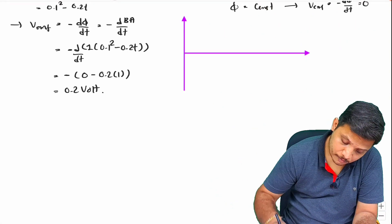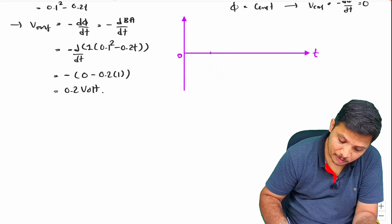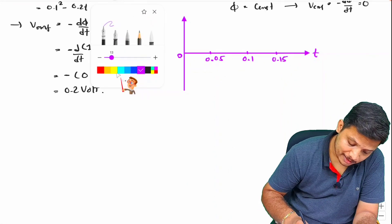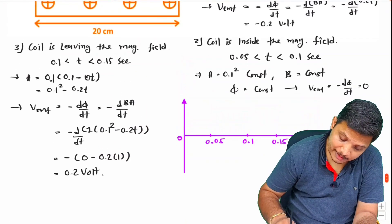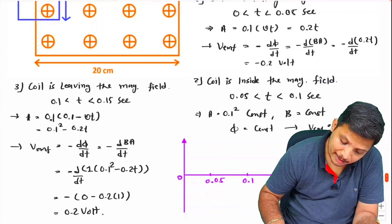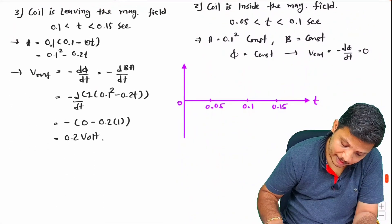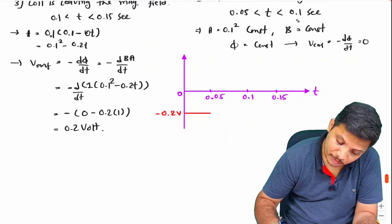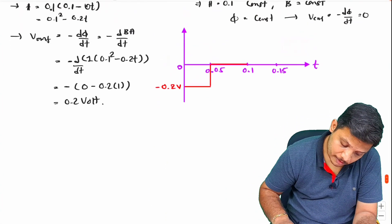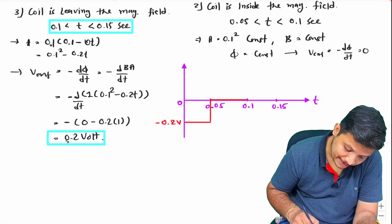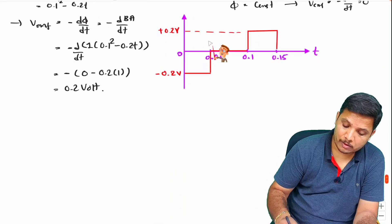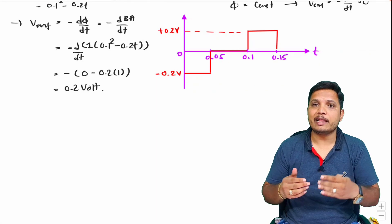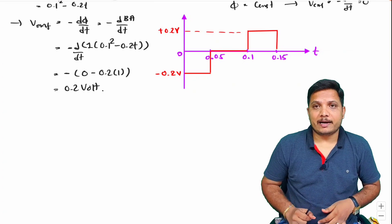To summarize the EMF plot: from 0 to 0.05 second, EMF is minus 0.2 Volt; from 0.05 to 0.1 second, EMF is 0; and from 0.1 to 0.15 second, EMF is plus 0.2 Volt. This is how the voltage variation happens with respect to time. This is quite tricky, but I hope it helps you understand future problems of Faraday's law. Thank you so much for watching this video.